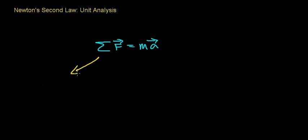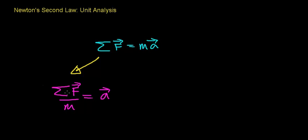In the course of solving Newton's Second Law, you'll find that if you add up all the forces acting on an object and you divide it by the mass of the object, you'll find the acceleration of the object. That is, you're going to divide a unit of force, which is a Newton, by a unit of mass, which is a kilogram, and you're going to find a unit of acceleration — in this case, a meter per second squared.